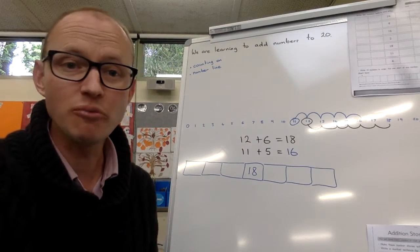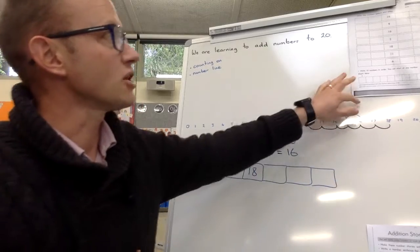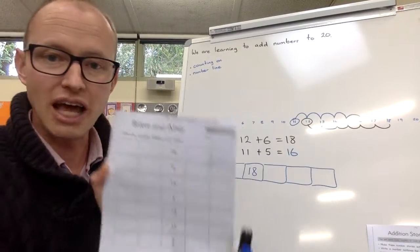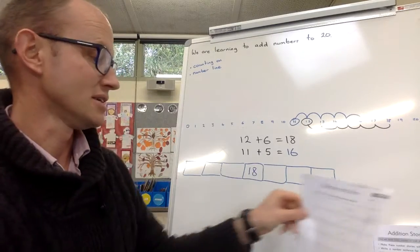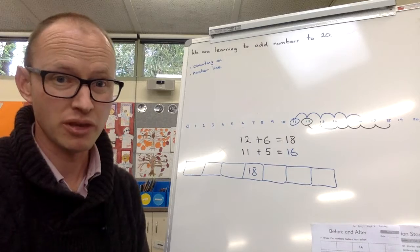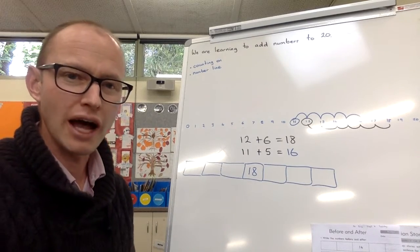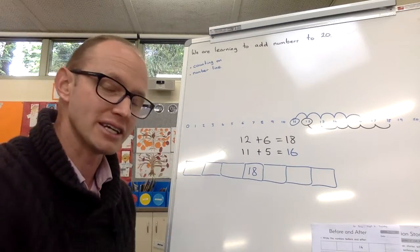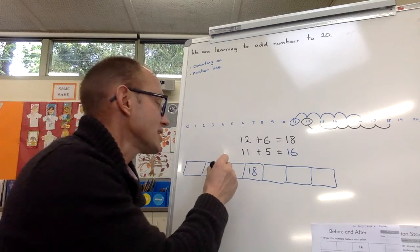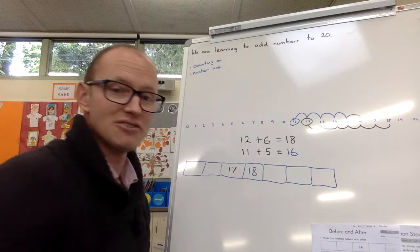Now this next part is the number before and after. And you're going to be doing that on your sheet today. So we're just going to have a quick little practice on here first. So I've got the number in the middle, 18. What is the number before 18? You can use your number line to help if you want, or you might actually just know. That's it. Number before 18 is 17.